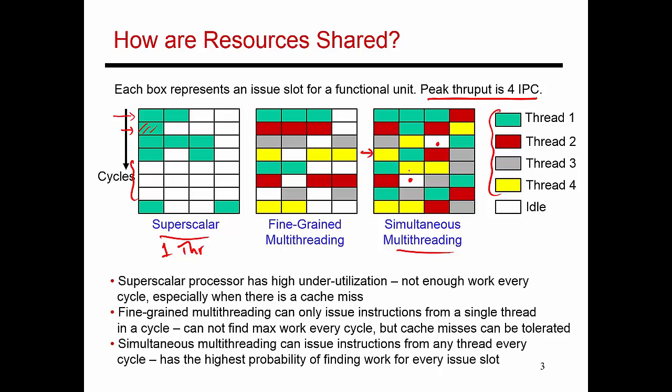There is an intermediate model as well called fine-grained multithreading, which says that you can have four threads active at the same time, but in any given cycle you can only pick instructions from one thread. So in the first cycle you pick instructions from the green thread, in the second cycle from the red thread, then gray, then yellow, then cycle back to green, and so on. You will see an example of this when we discuss GPUs in the next video.